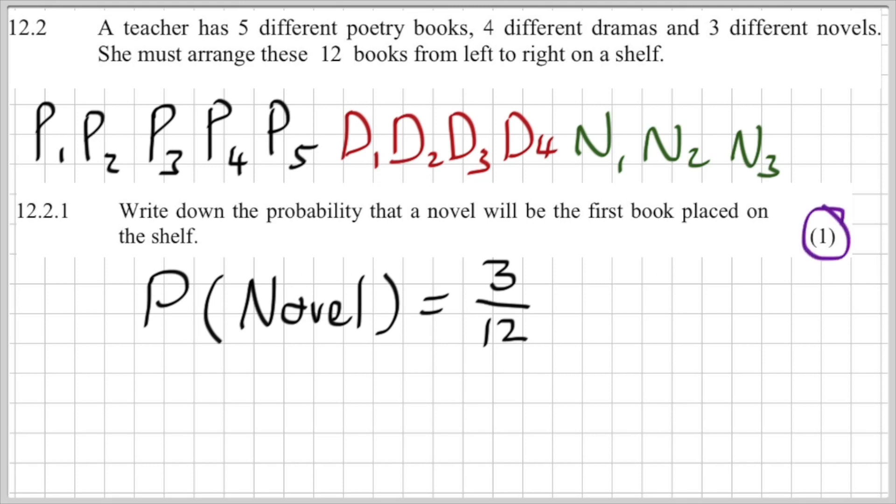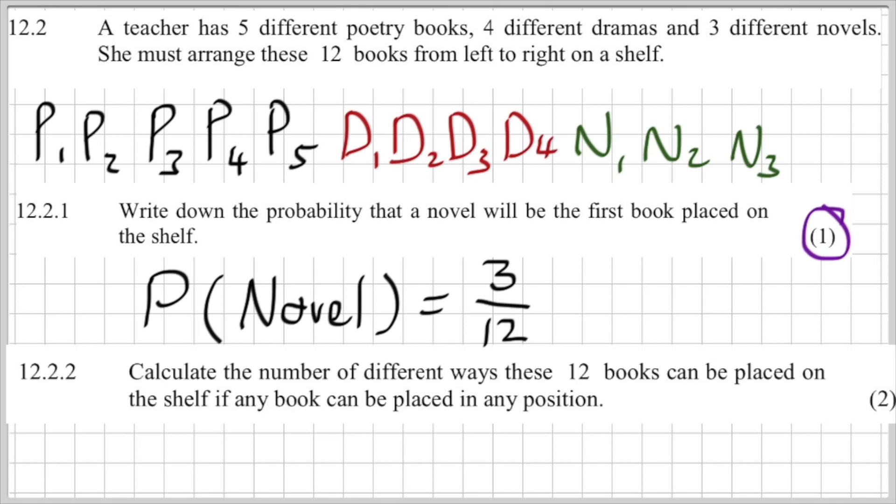Looking at 12.2.2 is where we start going into matric work. Calculate the number of different ways that these 12 books can be placed on the shelf if any book can be placed in any position. Important question: are all of these books distinct? In other words can they be differentiated from one another? Yes they can. So if I've got 12 books it really is as simple as saying 12 factorial, plonking it in my calculator. That's a whopping 479 million different ways.